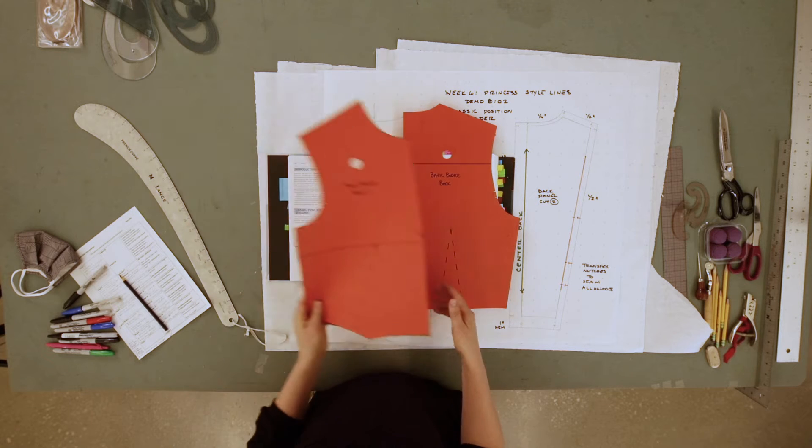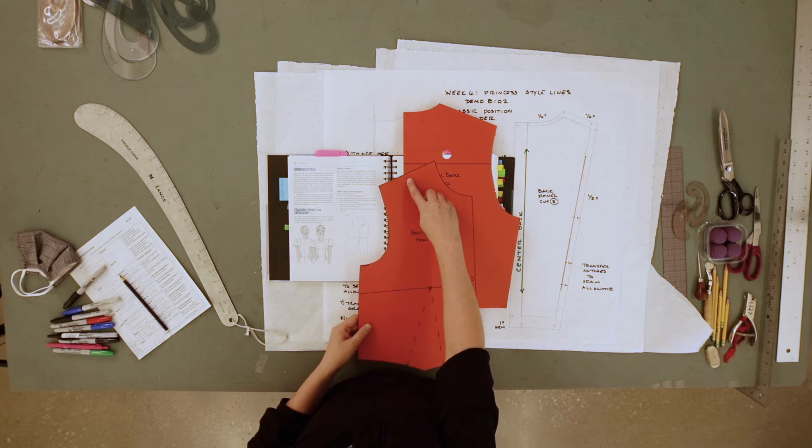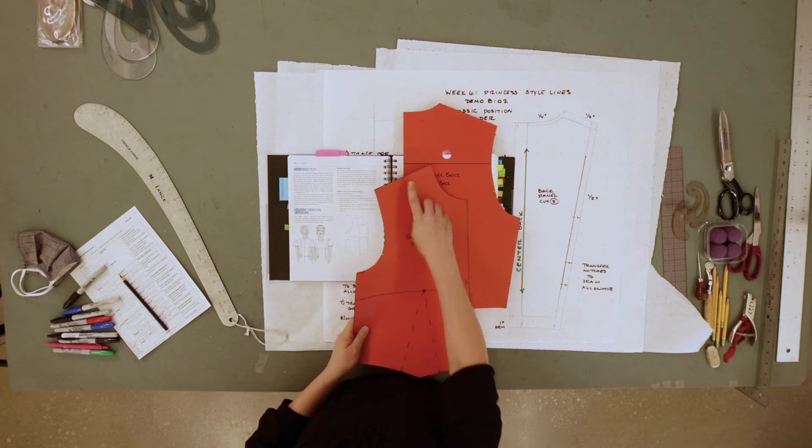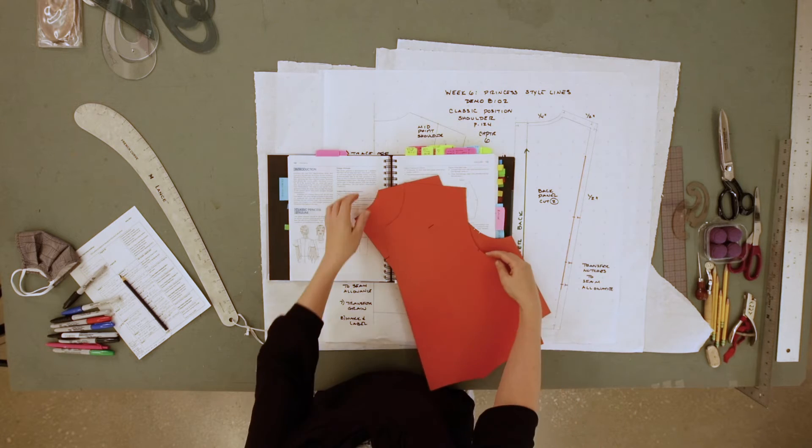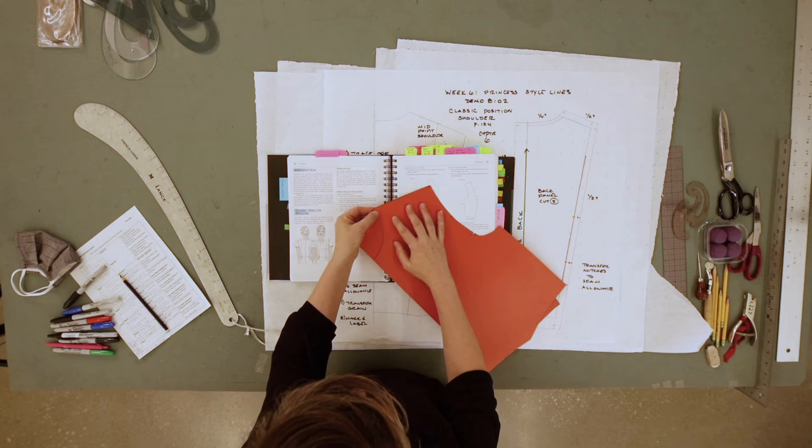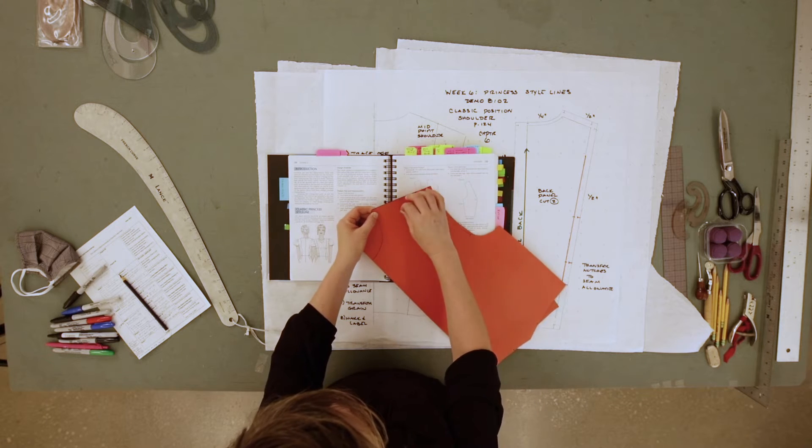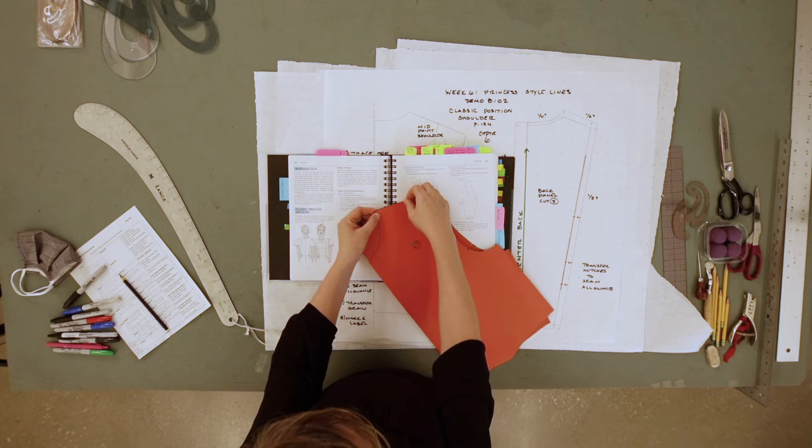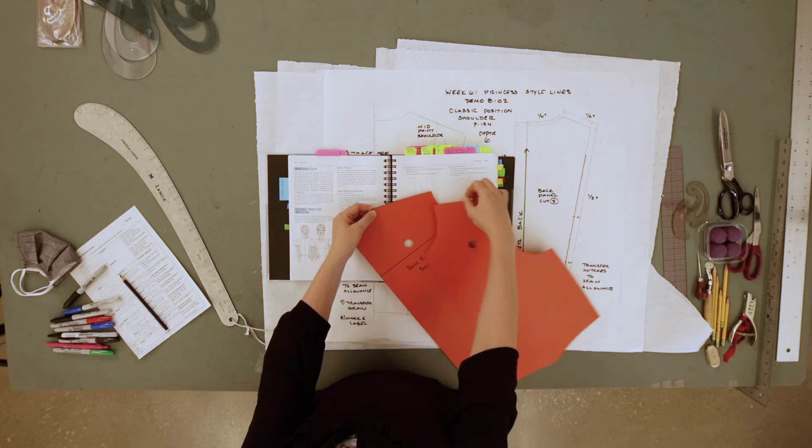So for example, here we marked our shoulder slope on our front bodice at our midpoint shoulder and that's what we used. You want to make sure you're transferring that same midpoint shoulder mark or style line to the back.